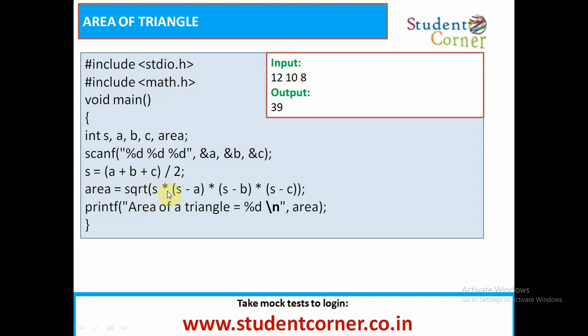So sqrt of s into s minus a into s minus b into s minus c, that is the formula where obviously we will get the output. We need to print that output.